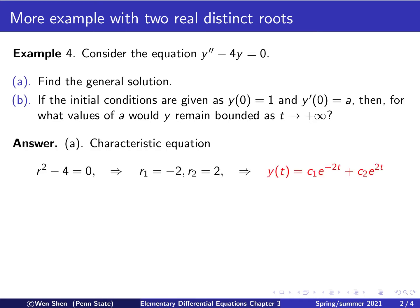Let's solve this. So part A, for the general solution, we know that we will need to set up the characteristic equation and find the roots. So, y double prime gives me r squared, negative 4y gives me negative 4. So, I solve this, I found two roots. One is negative 2, one is 2. So, two real and distinct roots.